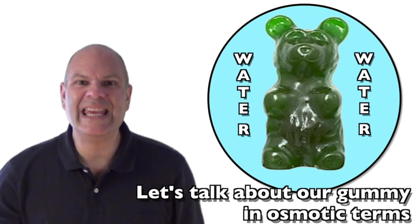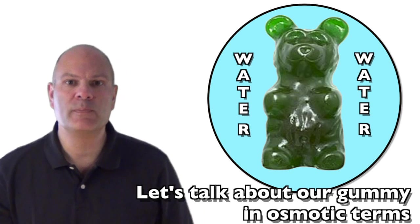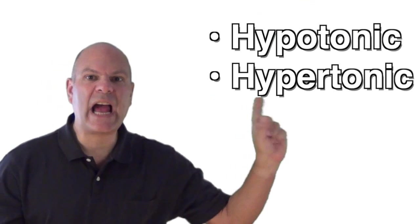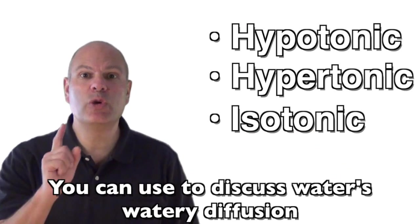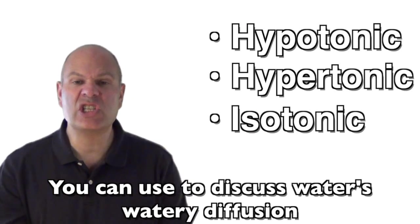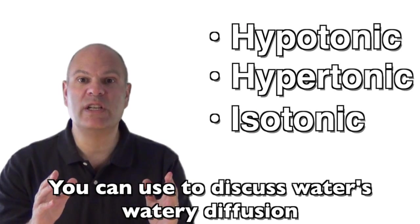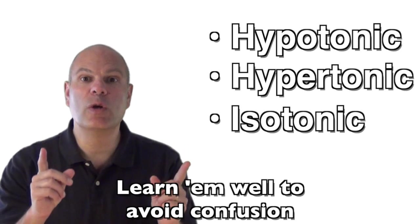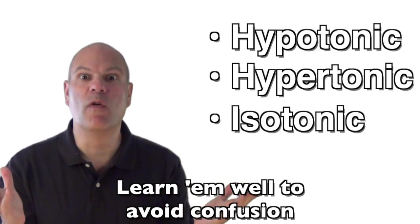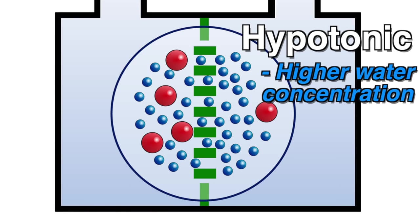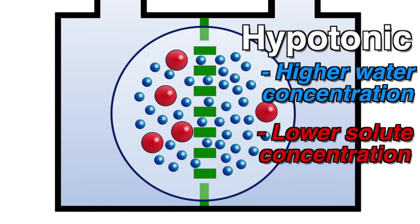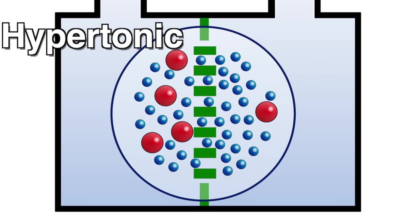Let's talk about our gummy and osmotic terms — hypotonic, hypertonic, isotonic — the words you can use to discuss water's watery diffusion. Learn them well to avoid confusion. Hypertonic means higher water concentration and relatively lower solute concentration.